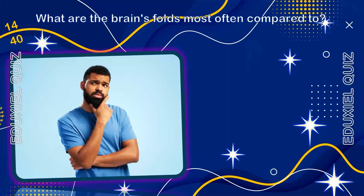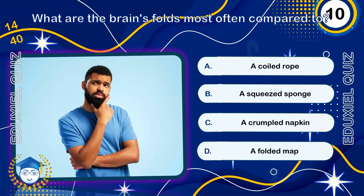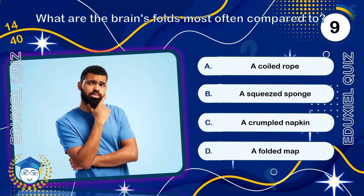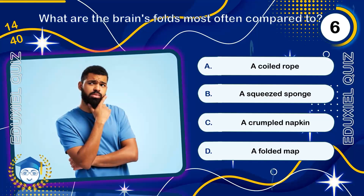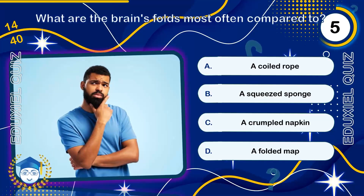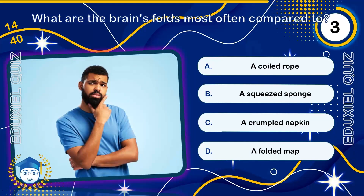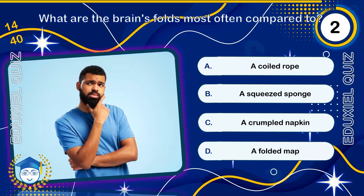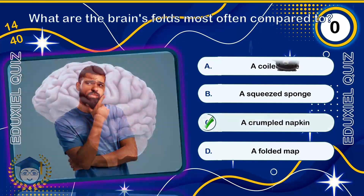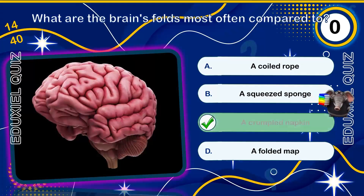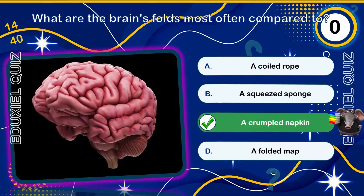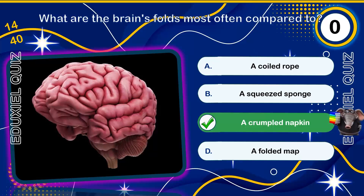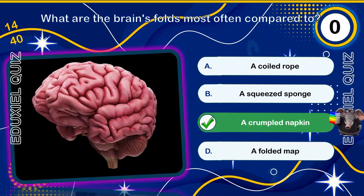What are the brain's folds most often compared to? A crumpled napkin. If the highly folded cerebral cortex were flattened, it would be about the size of a standard pillowcase, but it must be crumpled to fit inside the skull.